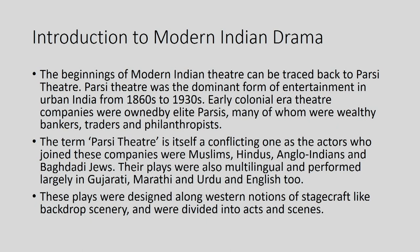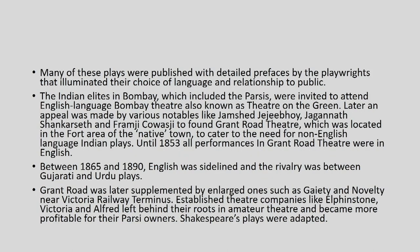The beginnings of modern Indian theatre can be traced back to Parsi theatre, which was the dominant form of entertainment in urban India from the 1860s to 1930s. Early colonial era theatre companies were owned by elite Parsis — many of whom were wealthy bankers, traders, and philanthropists. The term Parsi theatre itself is a conflicting one as the actors who joined these companies were Muslims, Hindus, Anglo-Indians, and Baghdadi Jews. Their plays were multilingual and performed largely in Gujarati, Marathi, Urdu, and English. Many of these plays were published with detailed prefaces by the playwrights illuminating their choice of language and relationship to the public.